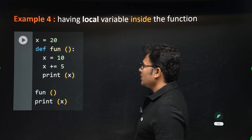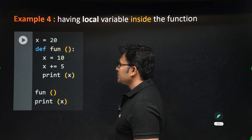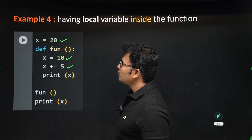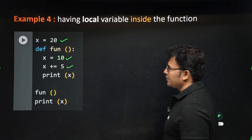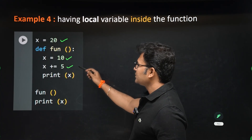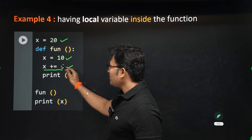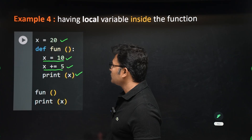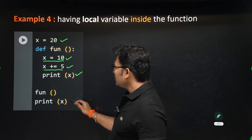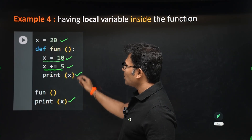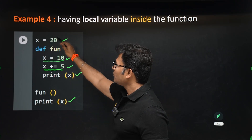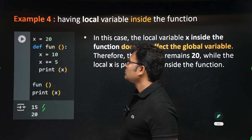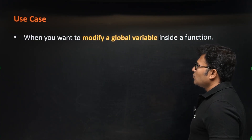When you have two variables with the same name — one local and one global — the local variable is always given higher priority. So x = x + 1 happens on the local variable, making x equal to 15. When you print x it will print 15, and then the global variable 20 is printed.